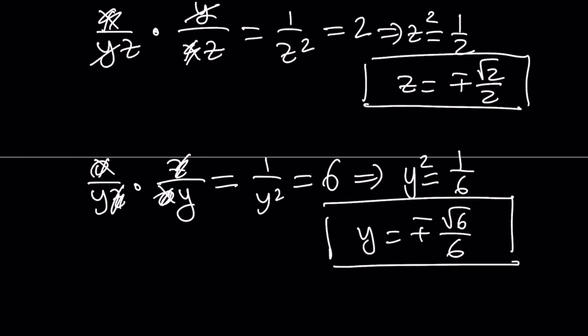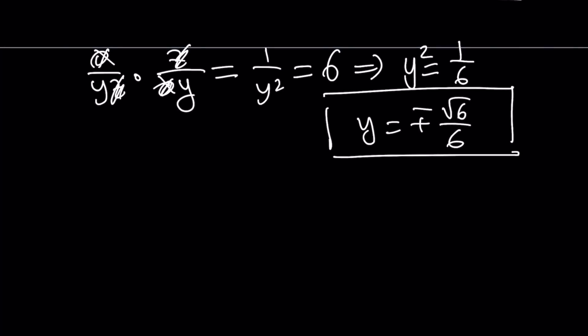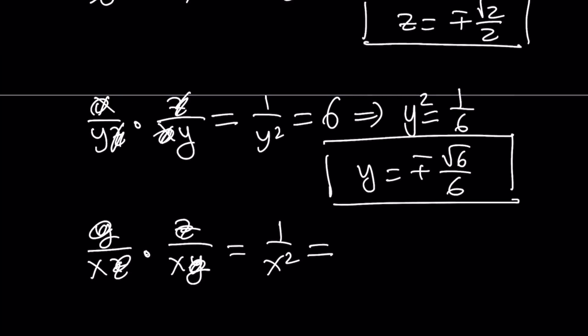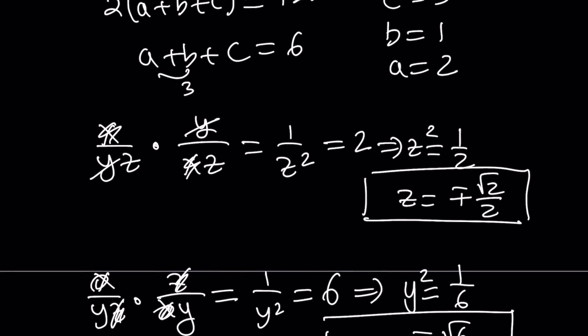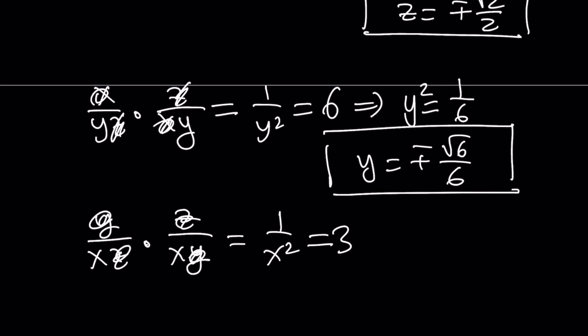And how do you find the X value? You multiply B and C together. What is B? Y over XZ, and C is Z over XY. Here Y cancels out, Z cancels out, and we end up with 1 over X squared. But if you multiply B and C, you get 3, right? And from here you get X squared equals 1 third, and X becomes plus minus 1 over root 3, which can be written as root 3 over 3 with the plus minus sign.